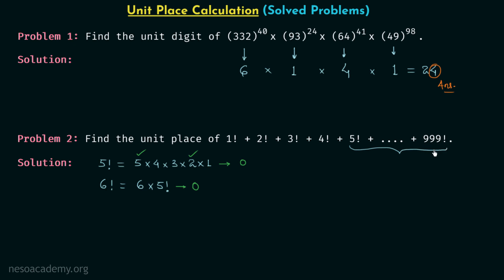So 5! + 6! + 7! + ... + 999! will give us 0 at the unit place. The remaining part is 1! + 2! + 3! + 4!. 1! gives 1 at the unit place. 2! = 2 × 1 = 2, giving 2. 3! = 3 × 2 × 1 = 6, giving 6. 4! = 4 × 3 × 2 × 1 = 24, which has 4 at the unit place.